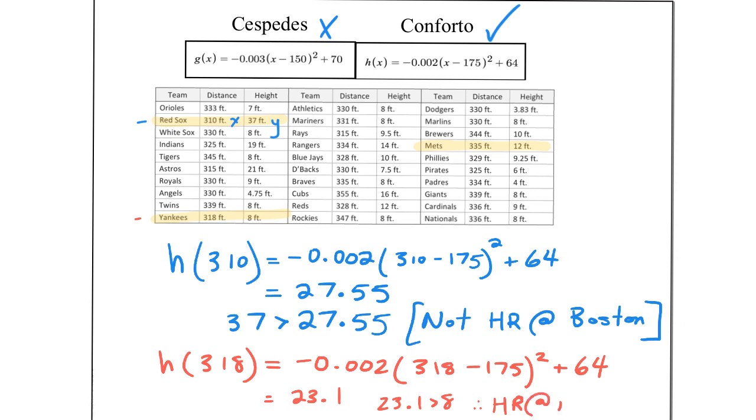And remember, this is all connected to Part 1, where we were testing Marlins or the Marlins Stadium and the two trajectories between Cespedes and Conforto. So if you didn't already, please watch Part 1, and you'll realize where these functions are coming from and how we knew Conforto was a home run.